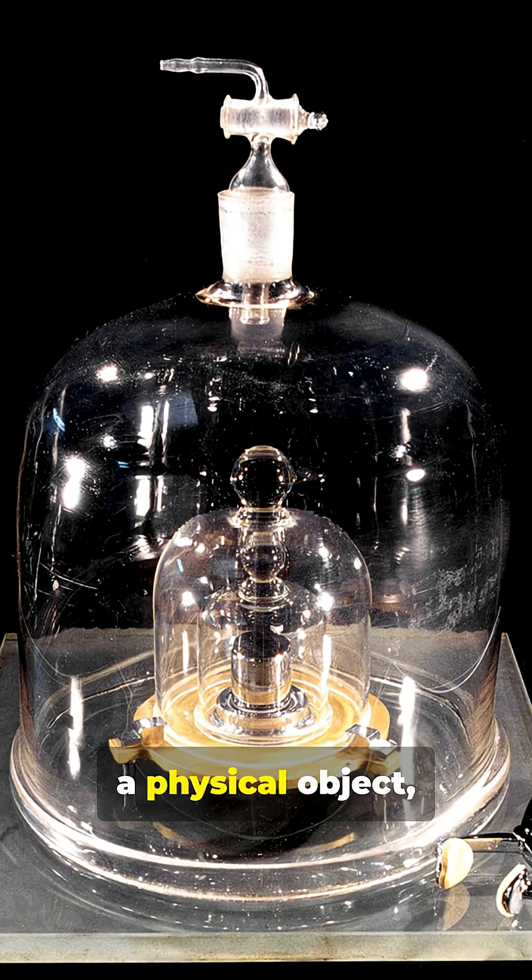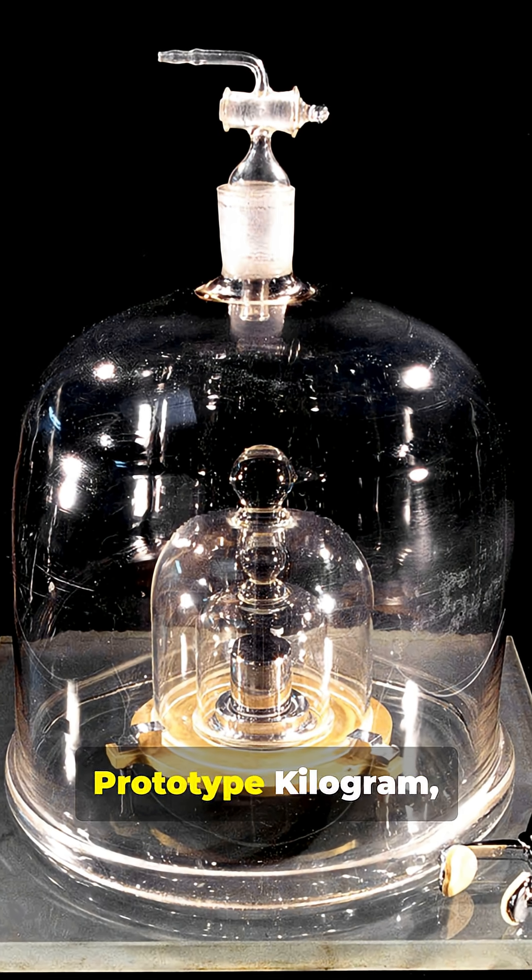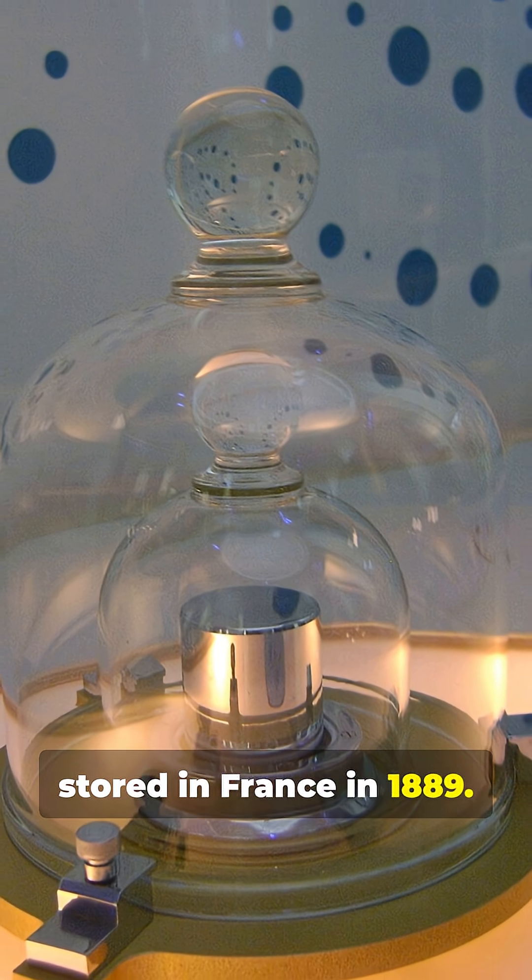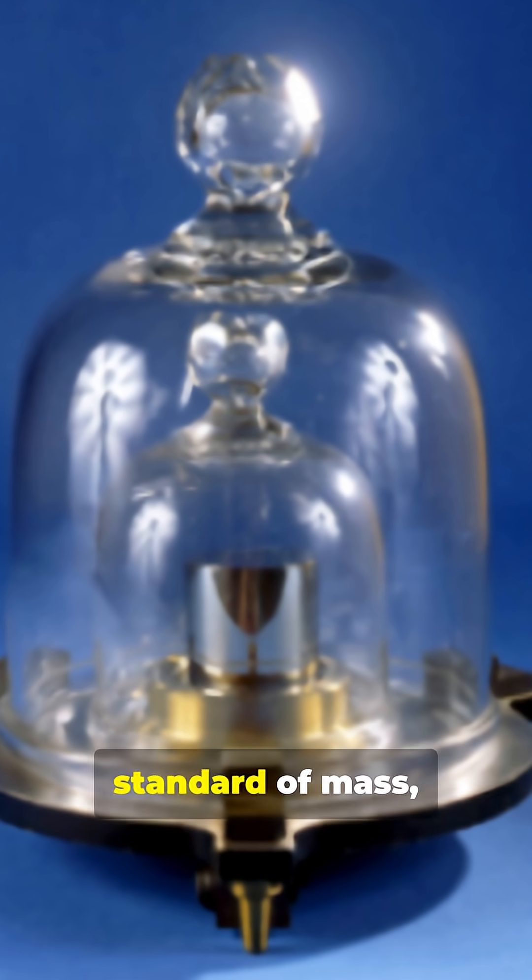So scientists created a physical object: The International Prototype Kilogram. A platinum-iridium cylinder, stored in France in 1889. This tiny cylinder became the world's standard of mass.